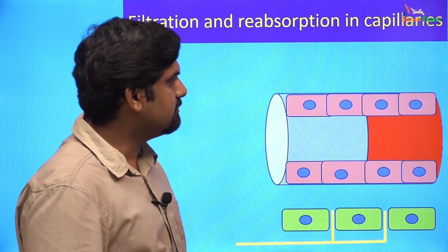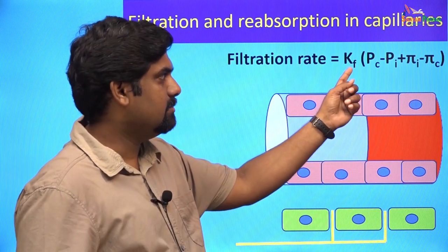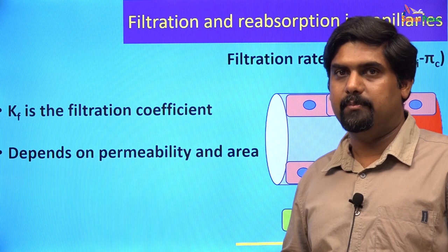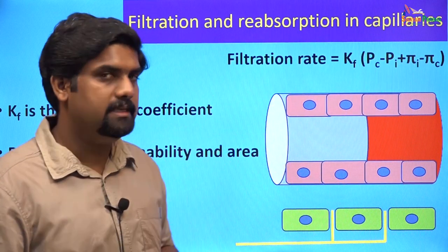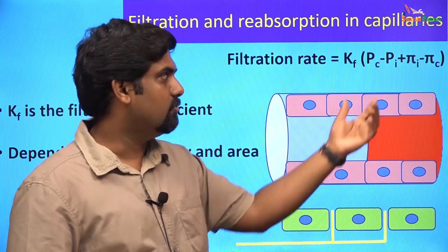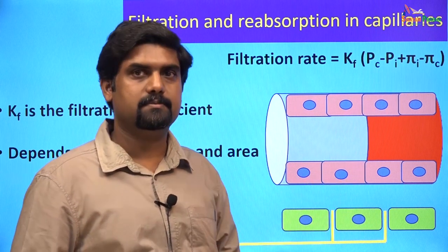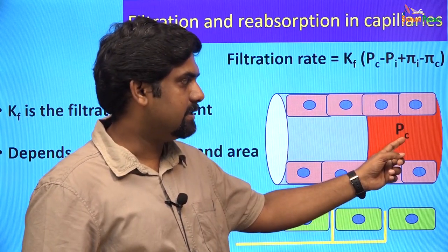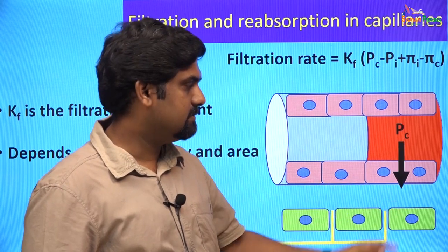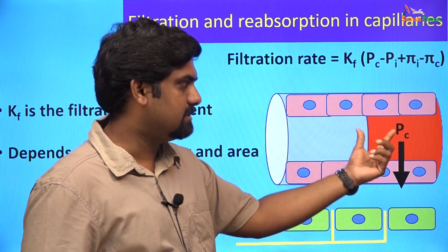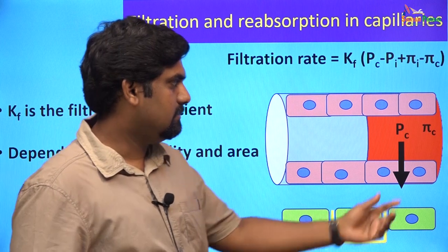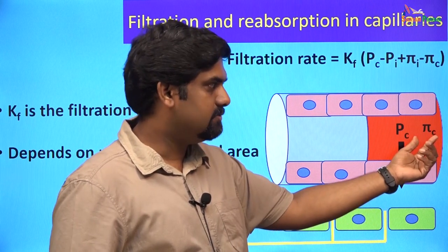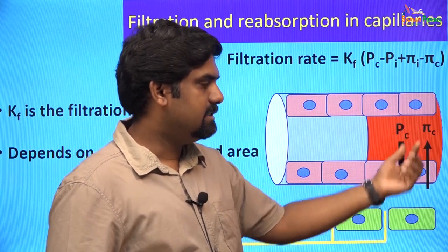The rate of filtration that happens at the arterial end is determined by KF, or the filtration coefficient, which is dependent on the permeability and surface area of the capillaries. The filtration rate is also dependent on the balance of forces called the Starling forces that operate across the capillaries. These forces include the capillary hydrostatic pressure or PC, which favors filtration. This pressure is due to the fluid that is present within the capillaries. Another force is the capillary colloid osmotic pressure or Pi C, which is due to the presence of proteins within the capillaries, and this pressure will favor reabsorption.